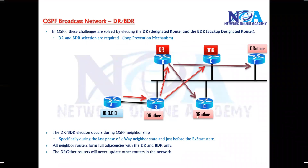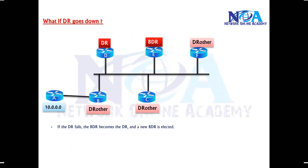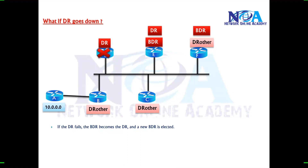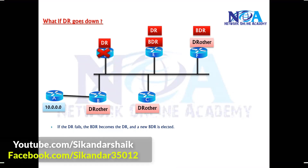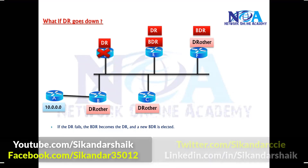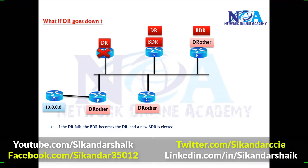This election is an automated process, though we can influence it by changing priority values. If the DR goes down due to a router failure or interface issue, the BDR automatically becomes the DR, and a new BDR is elected from the remaining routers. The same update process then continues with the new DR and BDR.